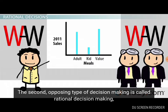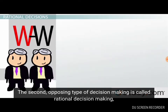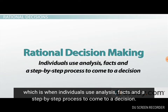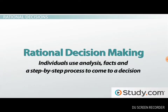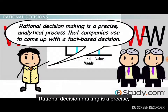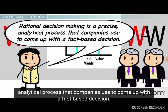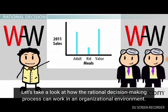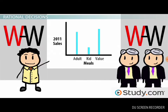The second opposing type of decision-making is called rational decision-making, which is when individuals use analysis, facts, and a step-by-step process to come to a decision. Rational decision-making is a precise, analytical process that companies use to come up with a fact-based decision. Let's take a look at how the rational decision-making process can work in an organizational environment.